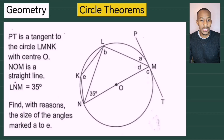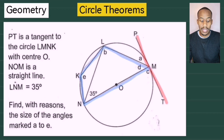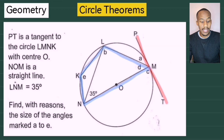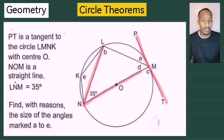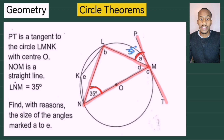Example number three — this one is a lot more challenging, so definitely pause the video to give it a try. Here you have a circle through points L, M, N, and K, with tangent PMT. Angle LMN is 35 degrees and O is the center. We need to find angles A to E. Angle A is between the tangent and chord LM. By the tan chord theorem, angle A equals the angle subtended from the chord, so angle A is 35 degrees.